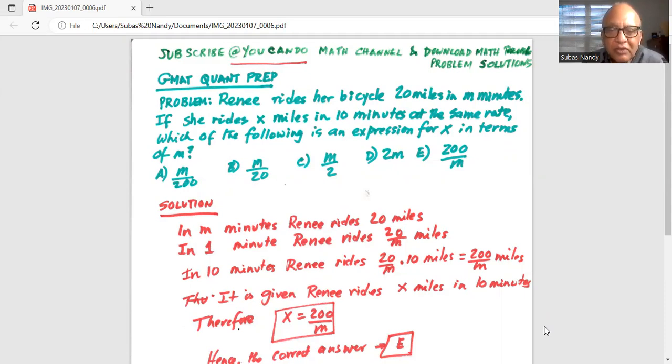It is given Renee rides X miles in 10 minutes. So X is equal to 200 over M. So the correct answer is E.